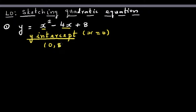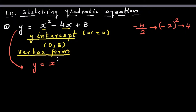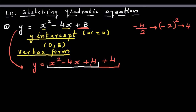Now let's write the vertex form using the completing the square method. The first step is to half the coefficient of x, which is negative 2. The next step is to square it, which gives 4. So we write: y equals x squared minus 4x plus 4, and to get back to 8 we add plus 4, giving us 4 plus 4 equals 8. The expression x squared minus 4x plus 4 is a perfect square — it equals x minus 2, the whole squared.